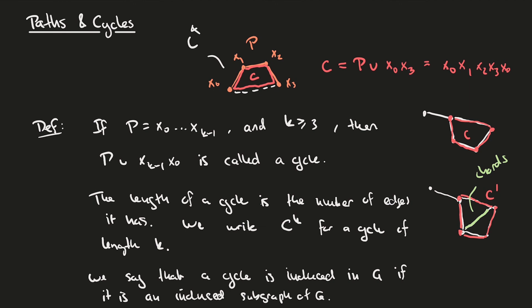This concludes the definitions and notations we'll need for describing paths and cycles. And next time we'll move on to prove some propositions about paths and cycles in graphs.